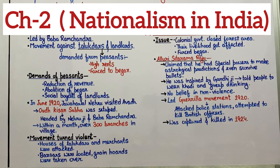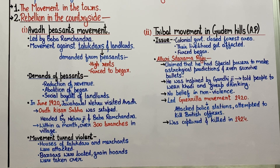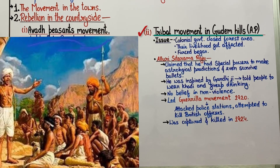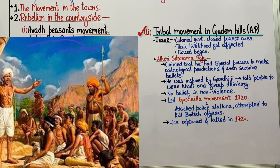So let's recap a little bit. In the last video session we studied that there were two movements happening — one was with peasants and the other was with the tribal population, the adivasi people. Now we are going to study the second movement. We have a heading for this: the Tribal Movement in the Gudam Hills of Andhra Pradesh.